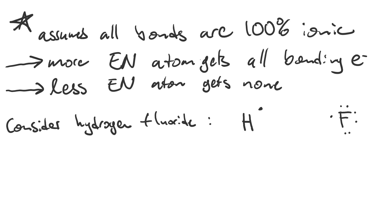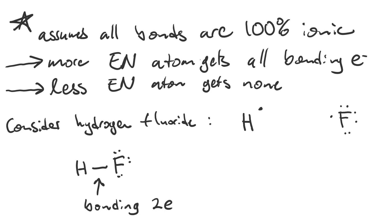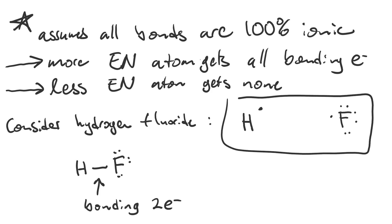Consider the molecule hydrogen fluoride. It's composed of a hydrogen atom bonded to a fluorine atom. Each one of these dots represents an electron, and the dashed line represents the bonding electrons — that's two electrons per bond. A plain hydrogen atom should have one electron and a plain fluorine atom should have seven. In the ionic limit, fluorine being more electronegative gets all of the bonding electrons — that means it gets both.